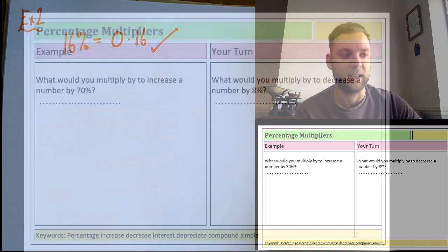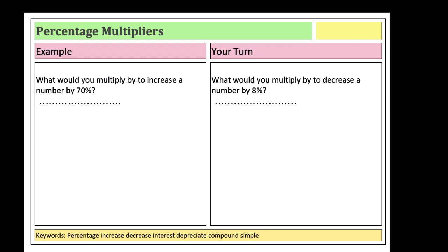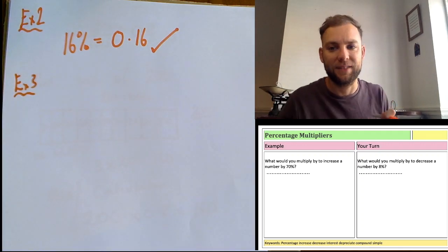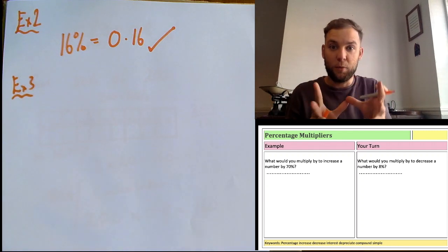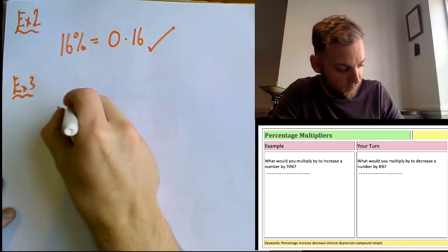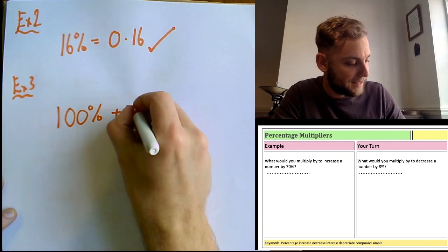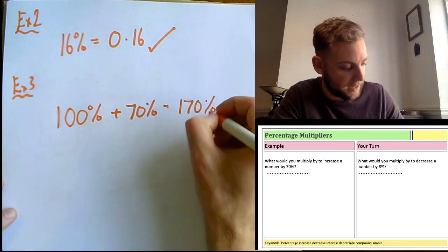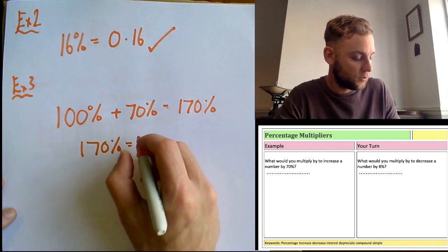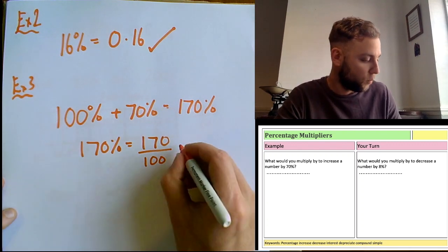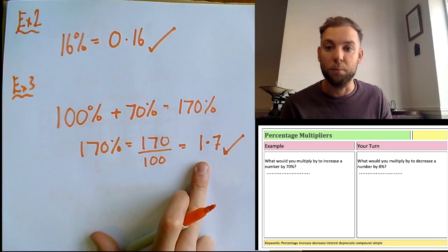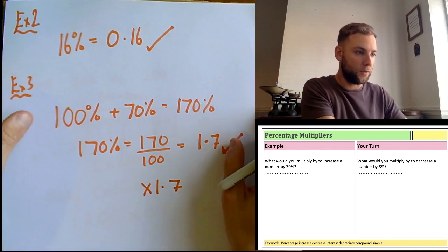Example 3: what would you multiply by to increase a number by 70%? Your original amount is always 100%. Increasing by 70% means 100% + 70% = 170%. Writing that as a decimal: 170 ÷ 100 = 1.7. So the multiplier to increase by 70% is 1.7.